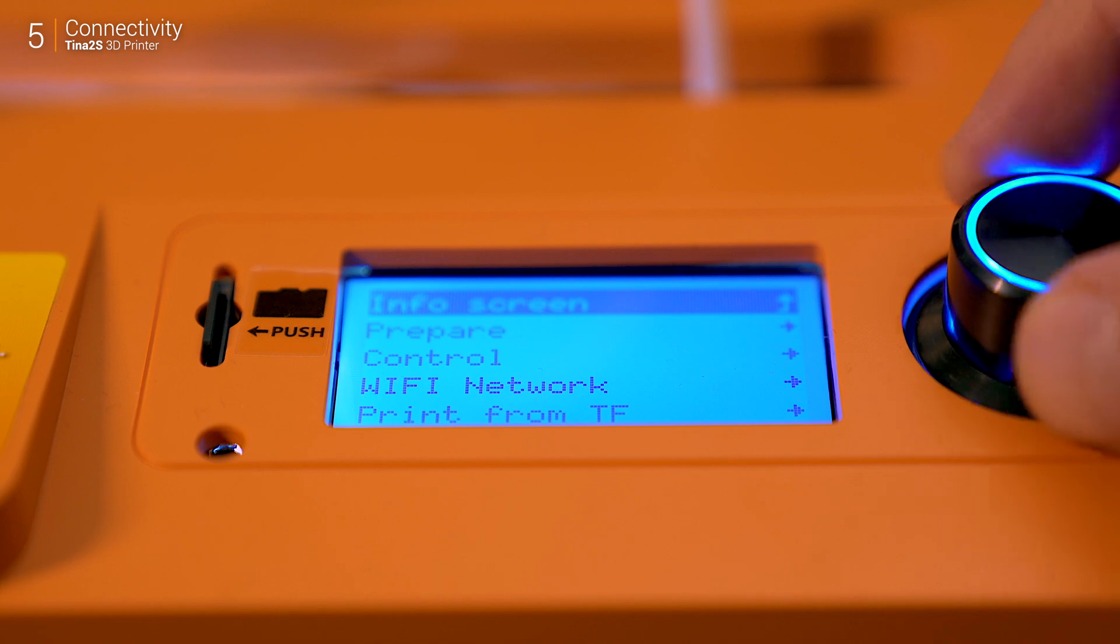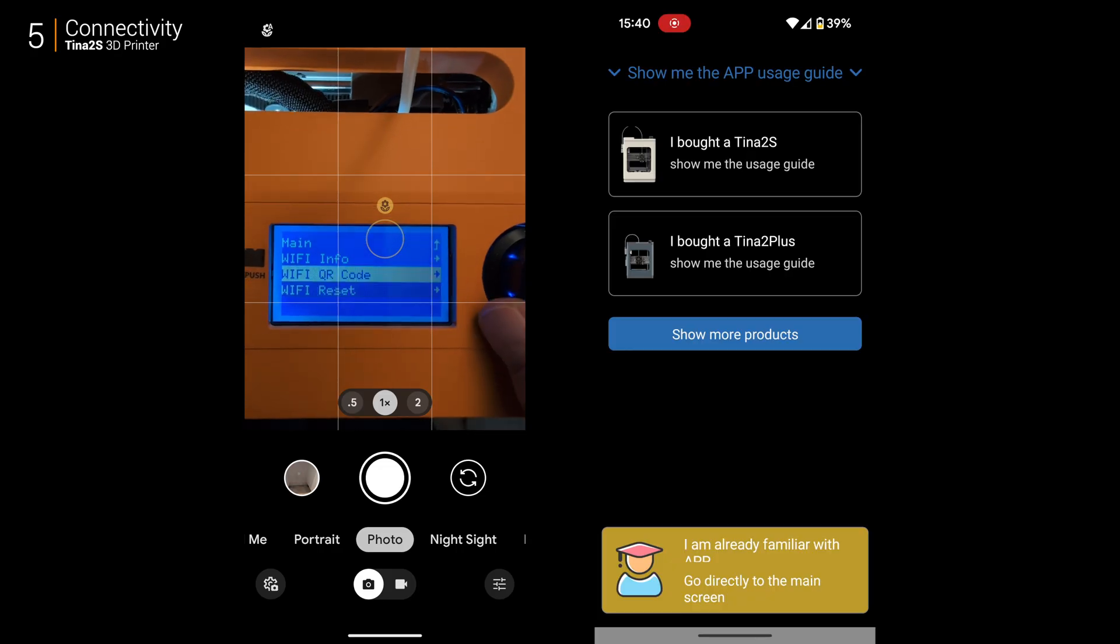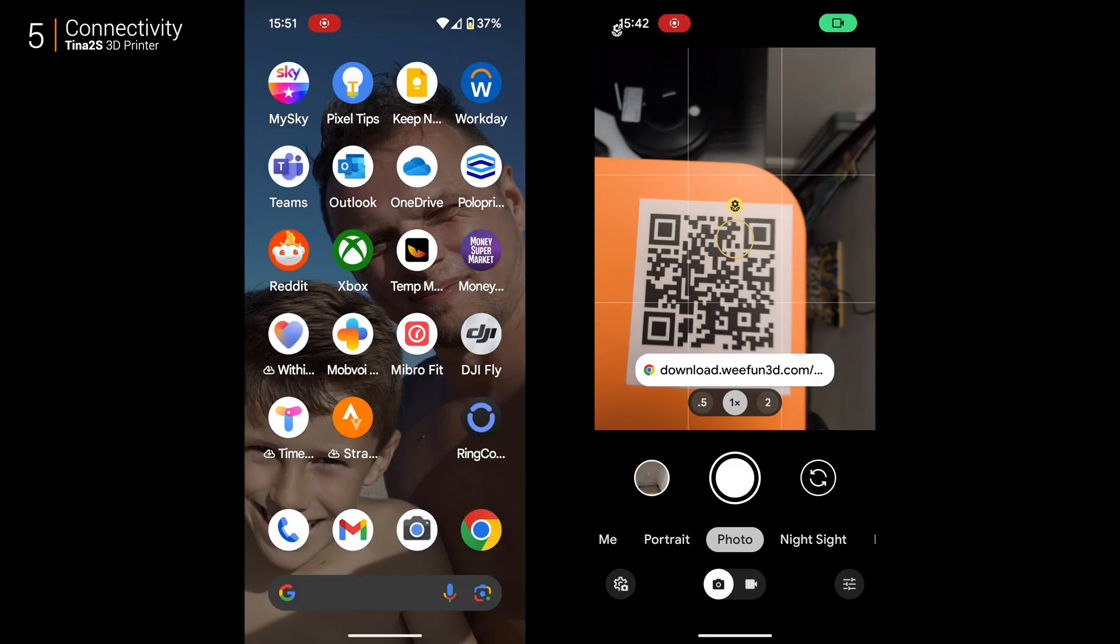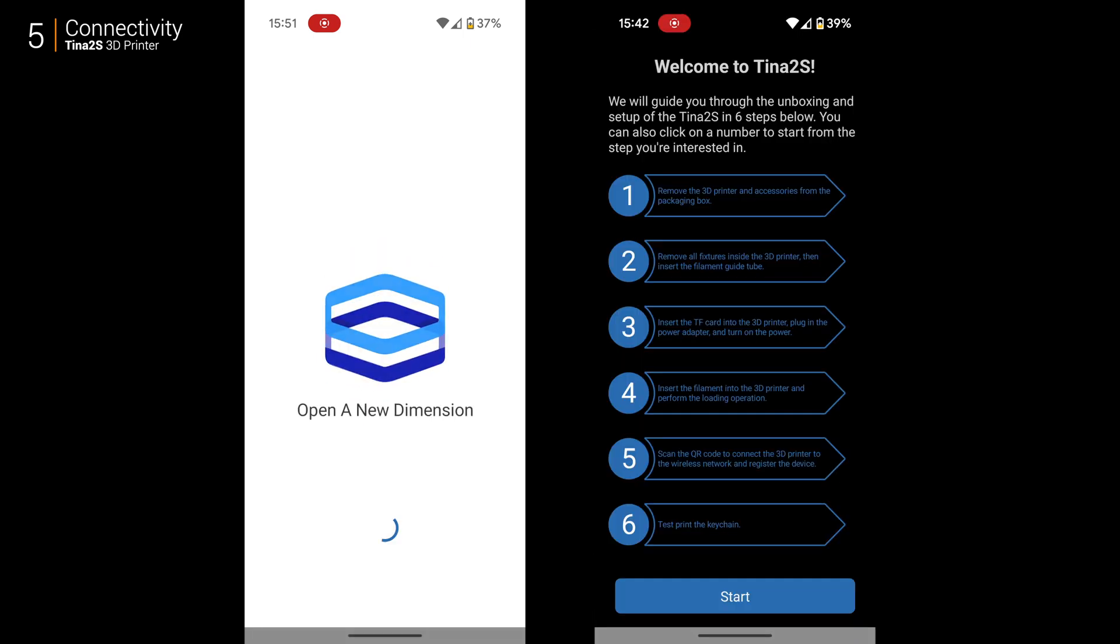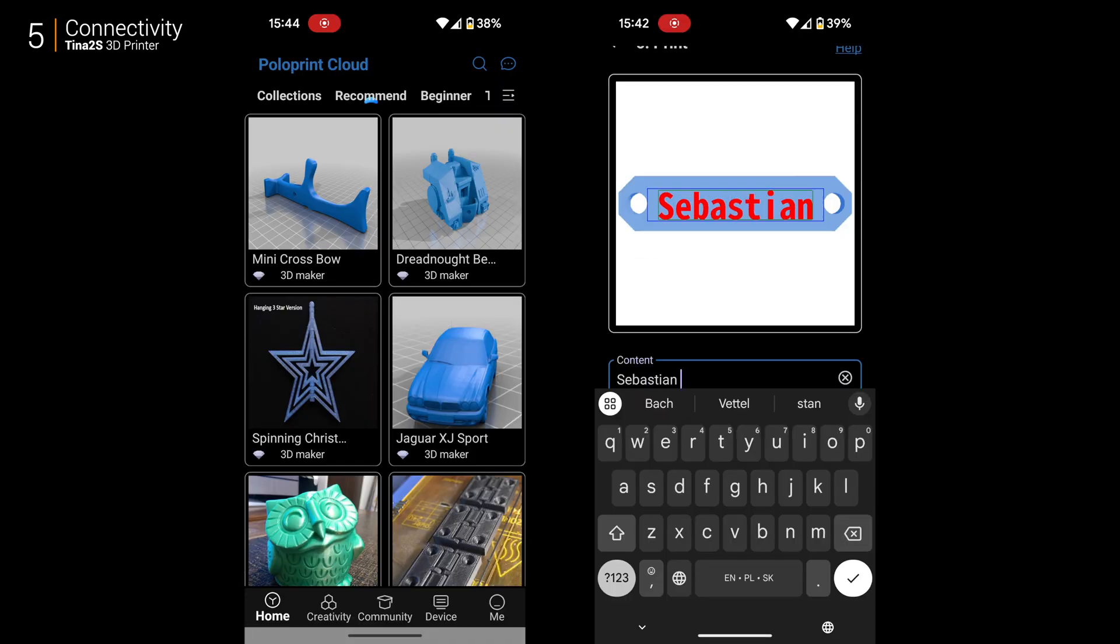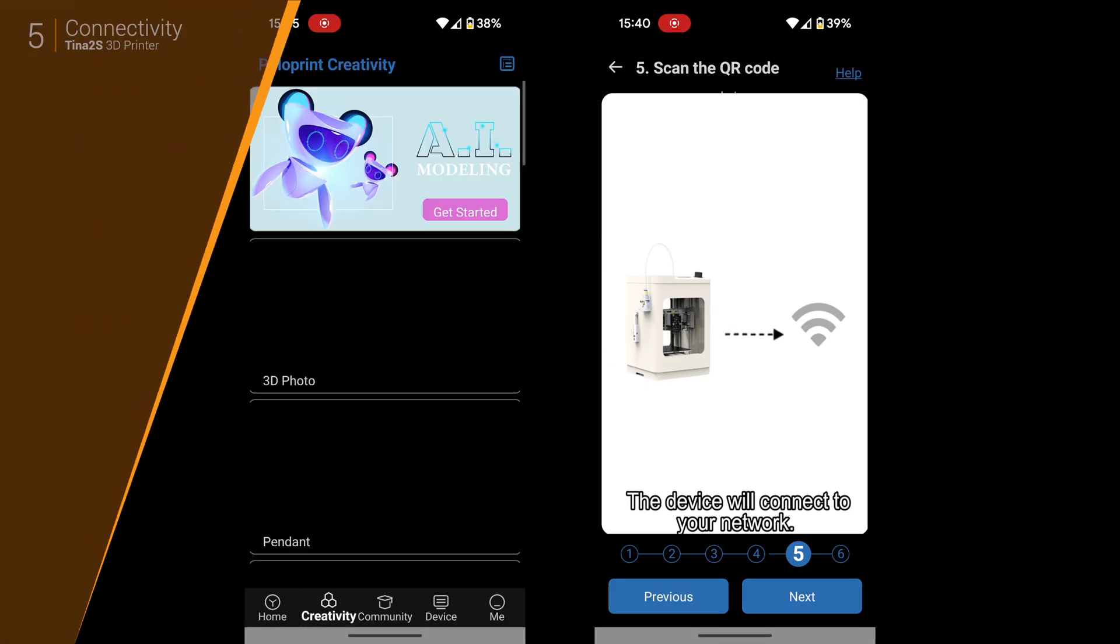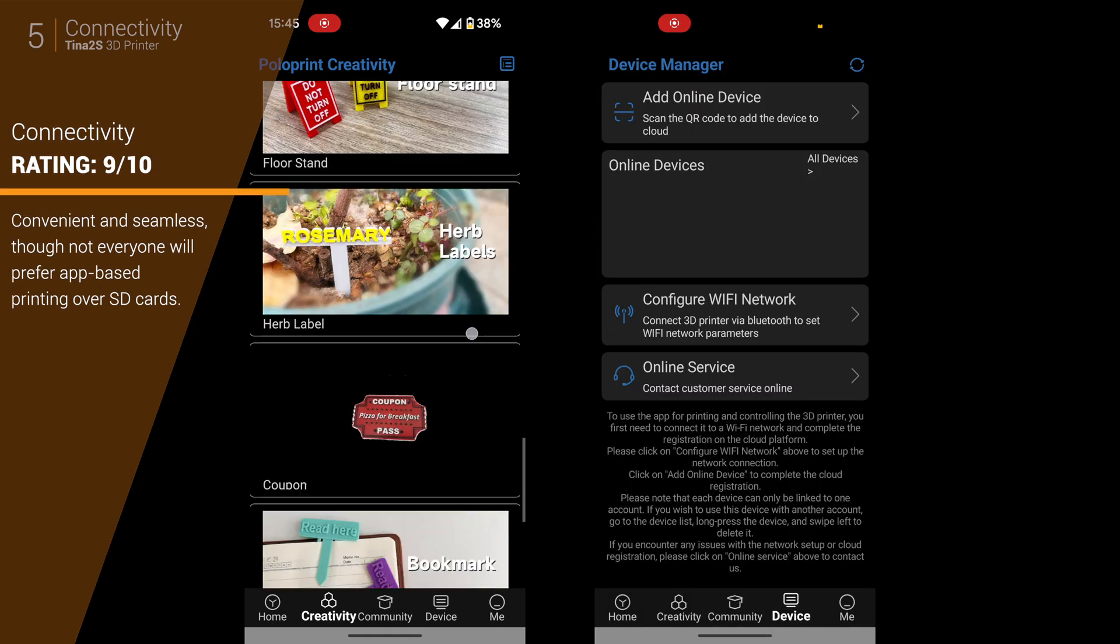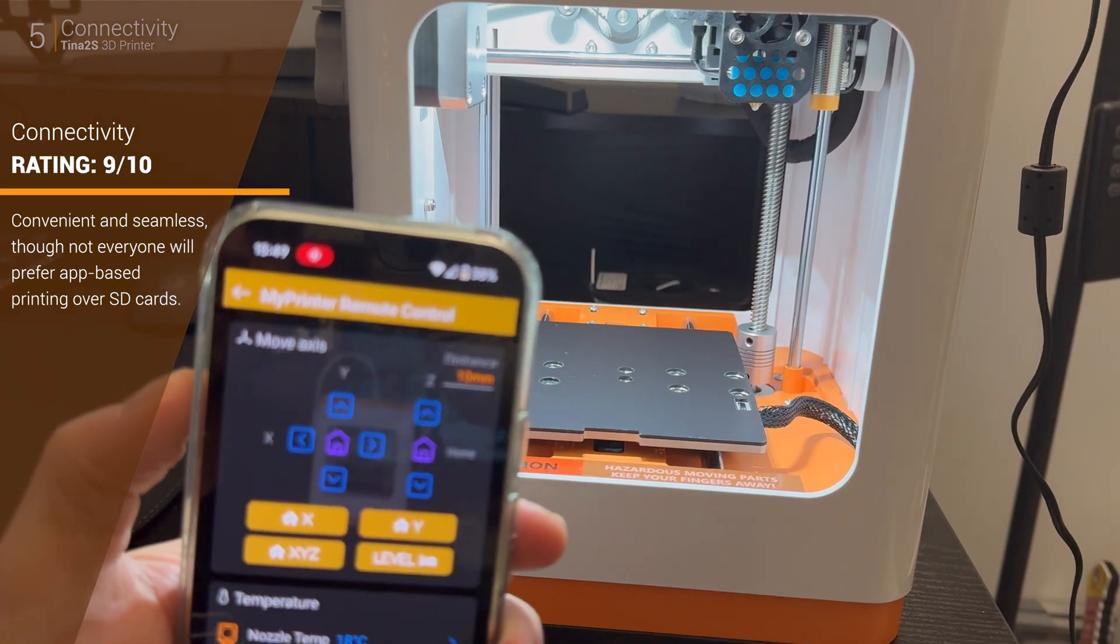The built-in WiFi is another standout. With the PoloPrint Cloud app, you can send models directly to the printer—no need to mess with SD cards. I tested it with a different model and it transferred flawlessly. This is great for quick changes or when you want to print something on the fly.